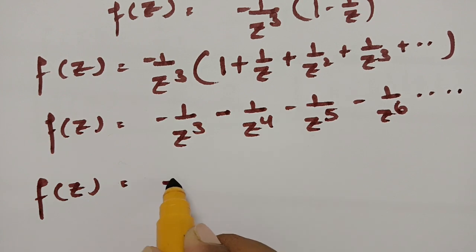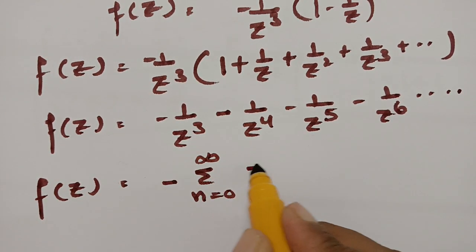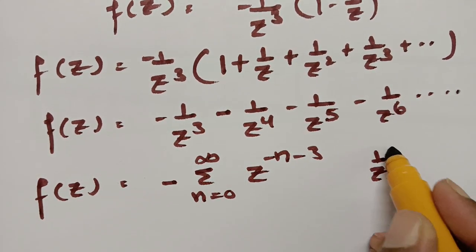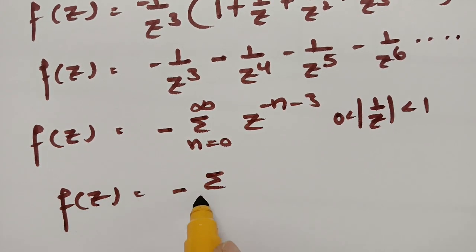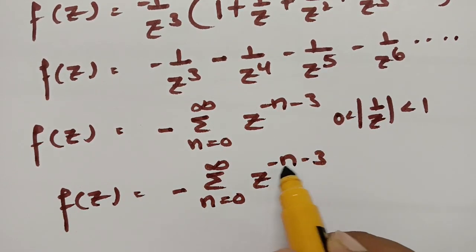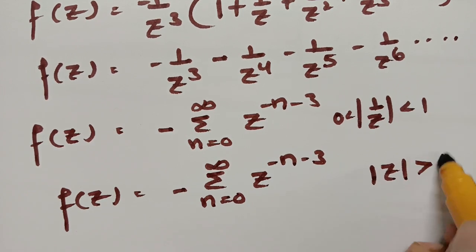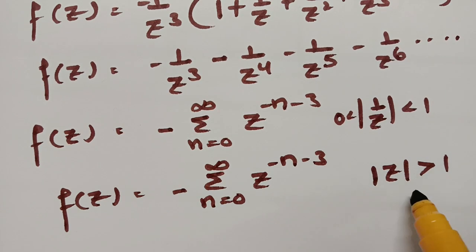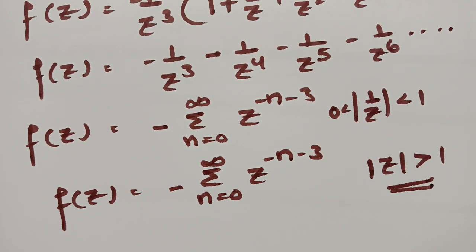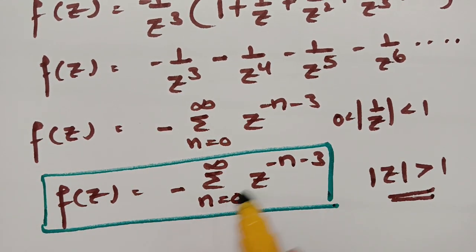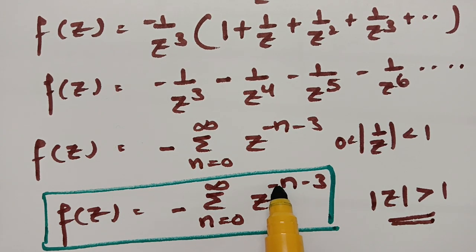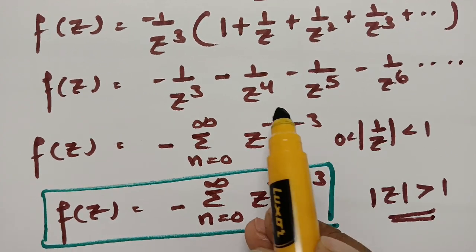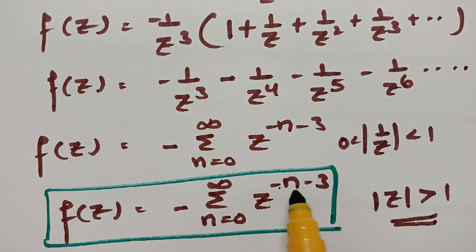This expansion can be written as f(z) = −Σ (n=0 to ∞) z^(−n−3), where the condition is 0 < |1/z| < 1, which means |z| > 1. This is the region of convergence. Checking: n = 0 gives −z^(−3) = −1/z³; n = 1 gives −1/z⁴; n = 2 gives −1/z⁵; and so on.